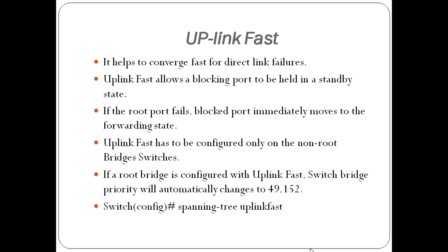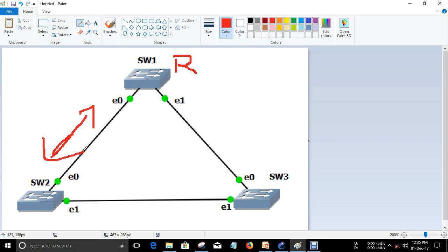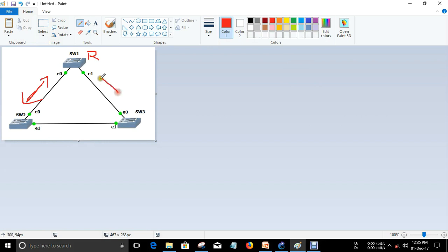Next is UplinkFast. UplinkFast helps achieve faster convergence time on a switch for direct link failures. To understand it, consider a topology: one switch is the root bridge, and BPDUs are transmitted between the switches. One port is the root port, another is designated, and one port is in blocking mode — the alternate port.